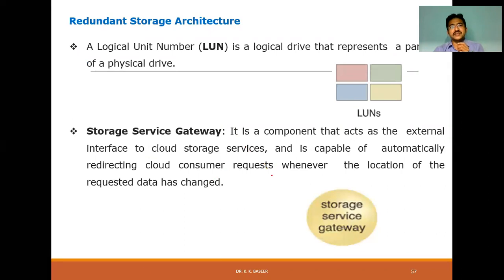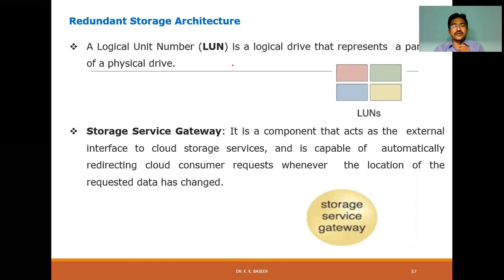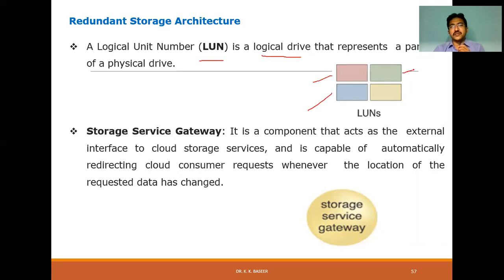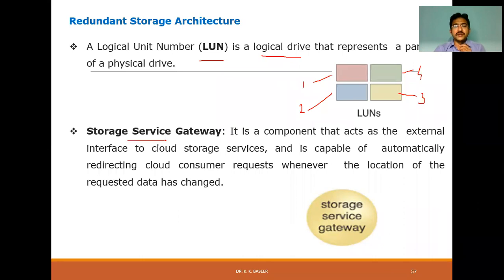Inside RSA, similar to previous topics on resource allocation where we used memory pools, CPU pools, and network pools, here in redundant storage we use storage-unit components. One key component is LUN — Logical Unit Number. Its main purpose is to divide a logical drive into a number of partitions representing partitions of a physical drive.